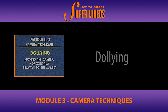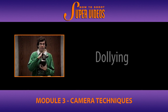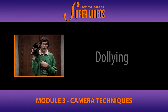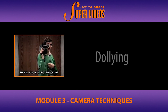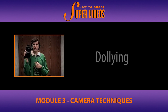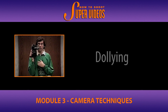Dollying means moving your camera horizontally relative to the subject. Up to now, the camera has been stationary and we've either panned or tilted. But now we're going to get up and physically walk with the camera — either laterally relative to the subject, or forwards and backwards. That is what we are referring to with dollying.